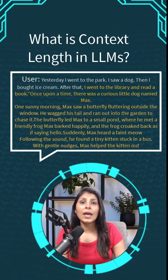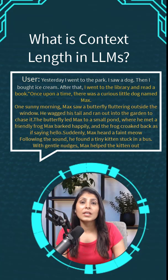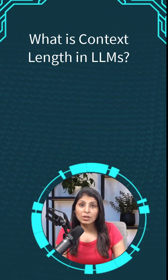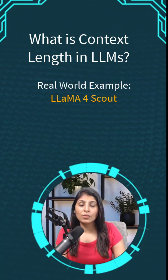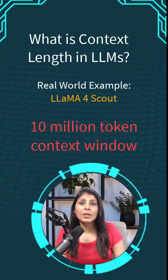So this context length or window is like an LLM's memory limit — it decides how much the model can keep in mind at once. For example, Llama 4 Scout, which is a LLM from Meta, has a context window of 10 million tokens.